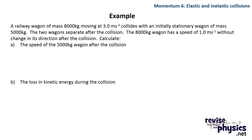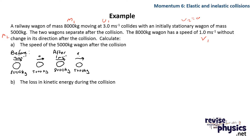Now let's look at a worked example. We have m1 for a railway wagon with initial velocity u1. It collides with a stationary wagon — u2 equals zero — of mass m2. We're told they separate after the collision, so it's not a perfectly inelastic collision. We're given v1 of the 8,000 kg wagon continuing in its original direction, and we need to find the velocity of the smaller 5,000 kg wagon.